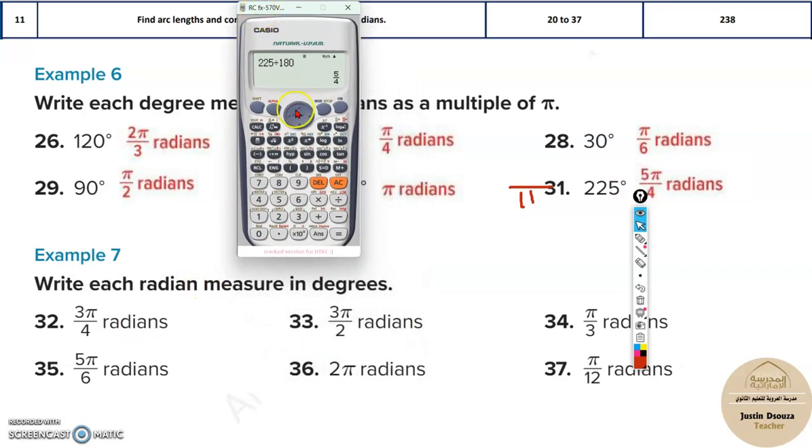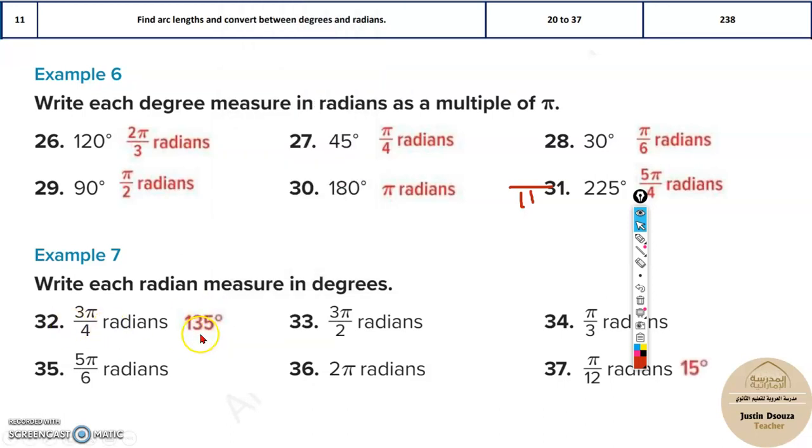Now, the conversion from radian to degrees is still easier, because you have this over here, say 3 by 4 π, right? Instead of writing π, write 180, because we know π means 180 degrees. So multiply it by 180, that's it. This will be 135 degrees.